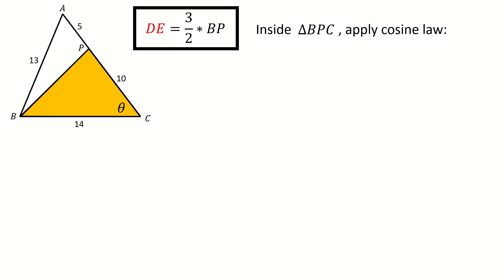We try to solve BP by using cosine law. Inside triangle BPC, we apply the cosine law, and then we plug in numbers. So we get this equation. We can see BP is related to cosine theta. But here we don't know what cosine theta is, so we still cannot solve what BP is. But it doesn't matter.